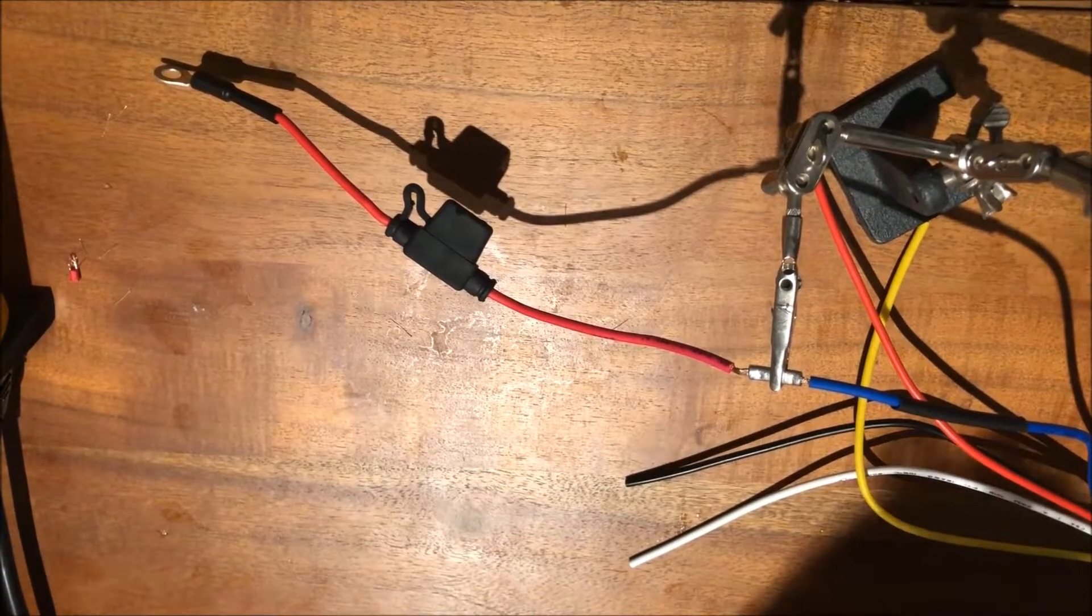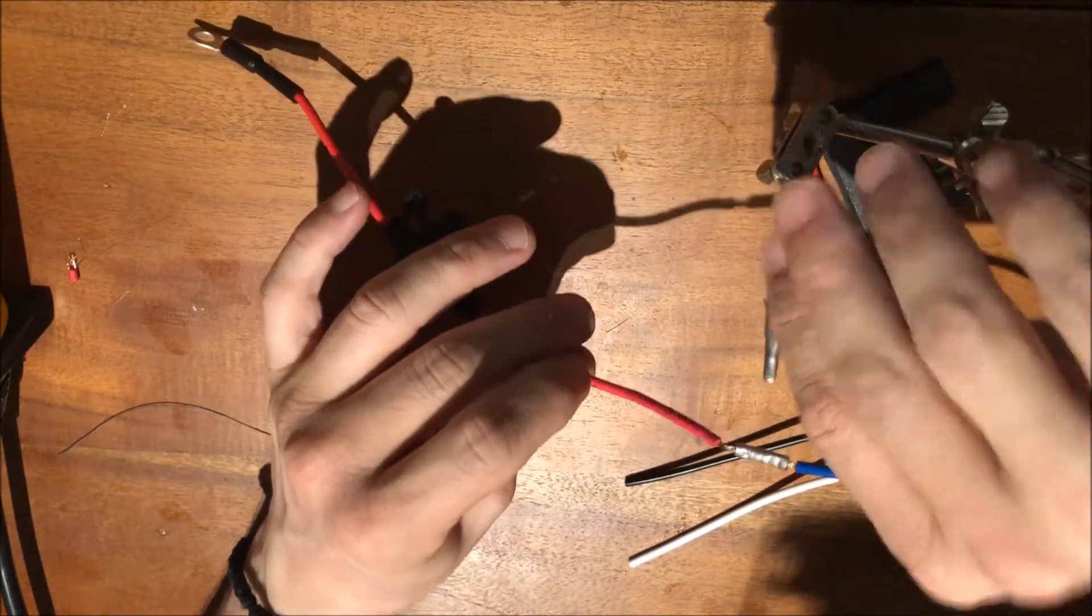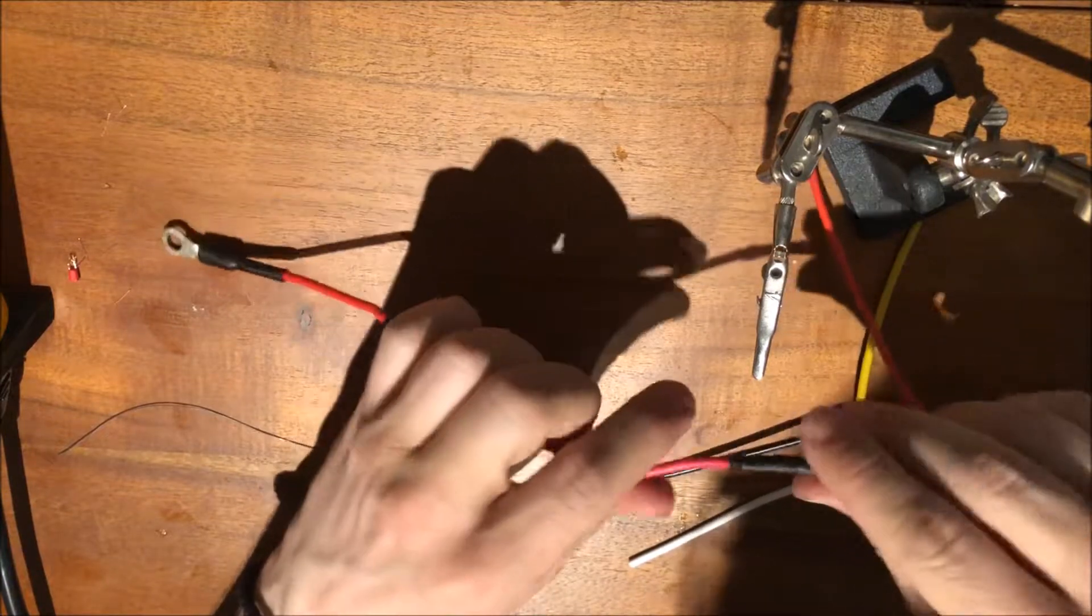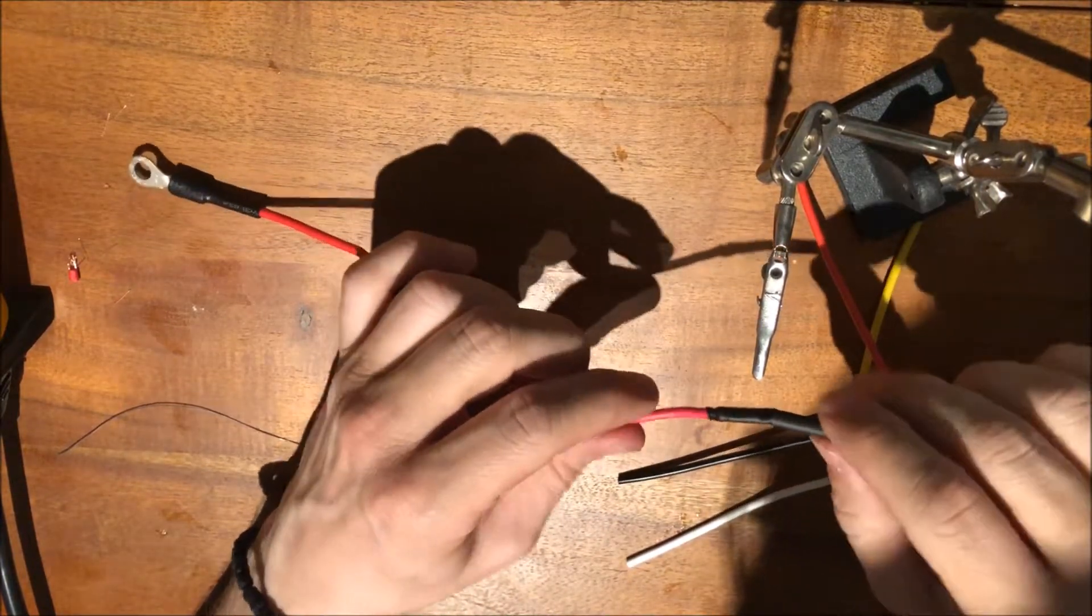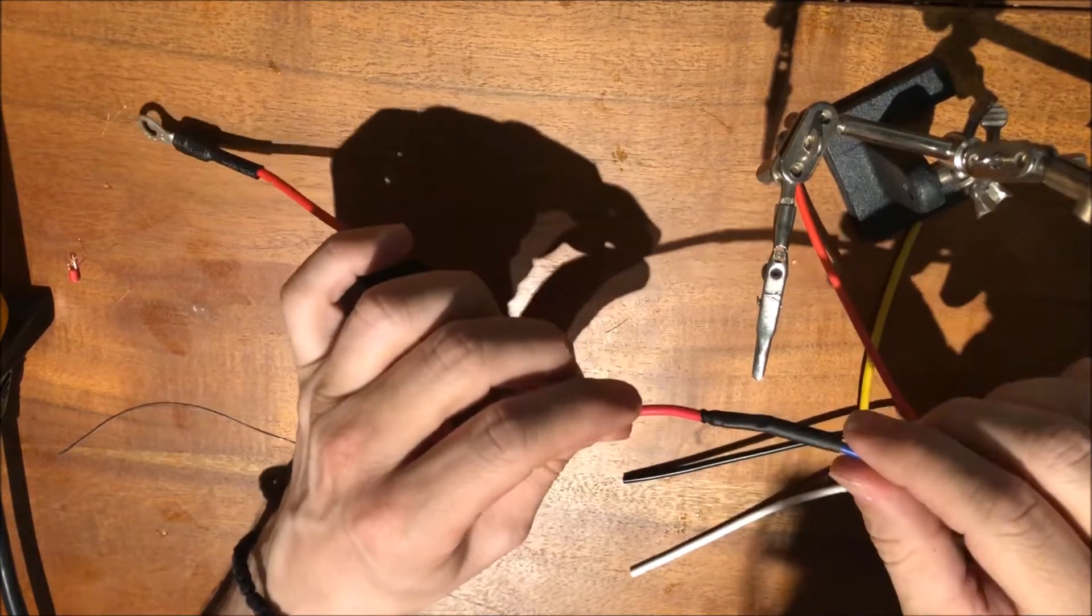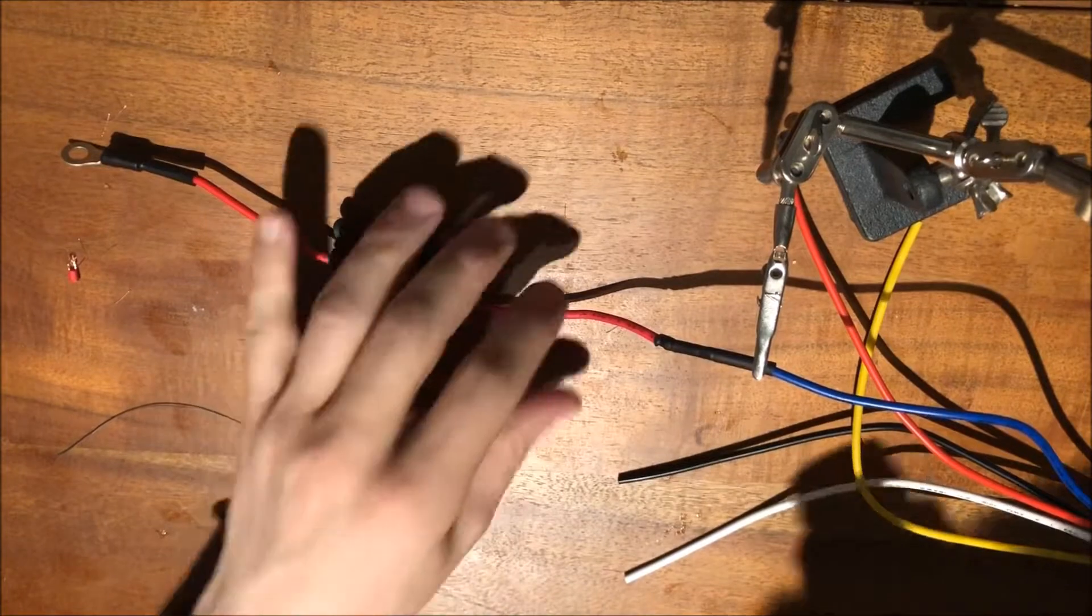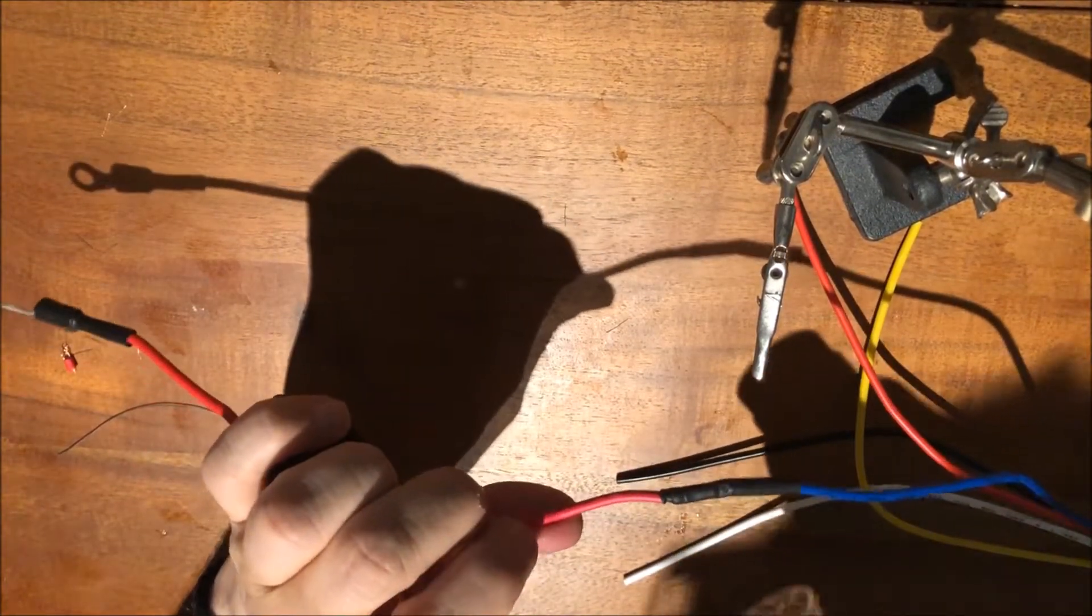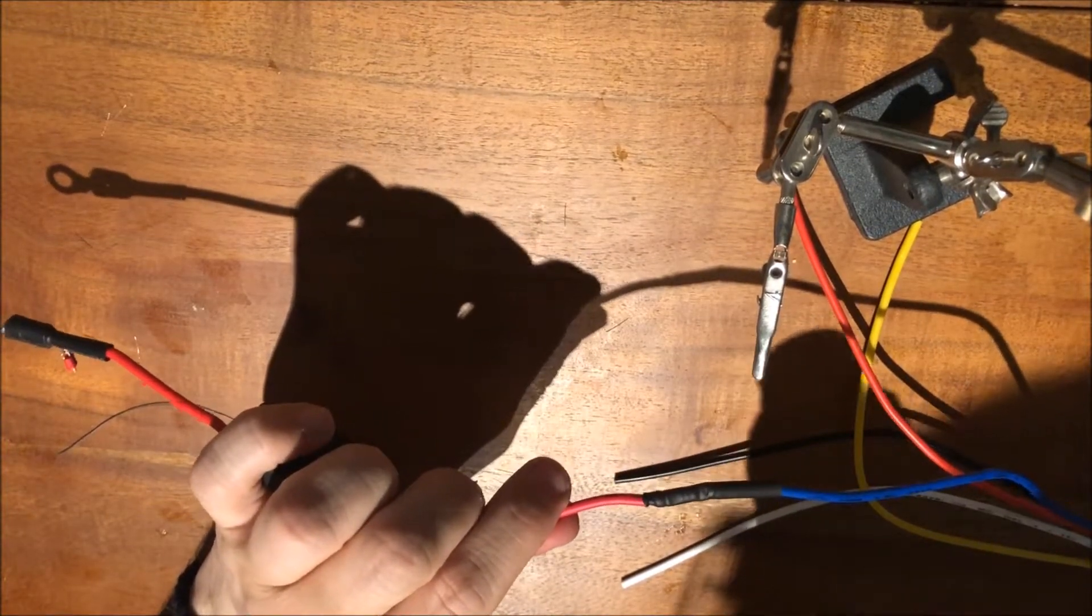There we go. All right, that should be nice and solid. So now that that connection's all set, I can slip the heat shrink over it. Oh, and my mistake - it's a little hot. Well, lesson learned, I should have waited until it cooled down for a bit. As you can see, it just already shrank right over. I should have seen that coming, but let me just finish up that job.